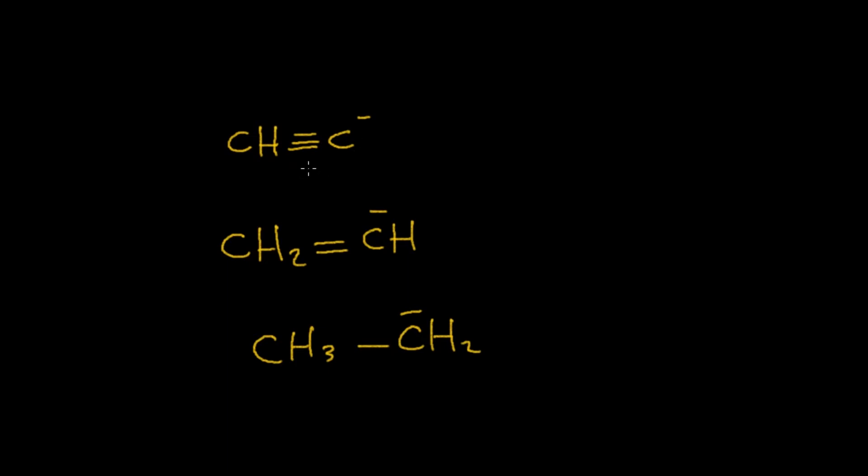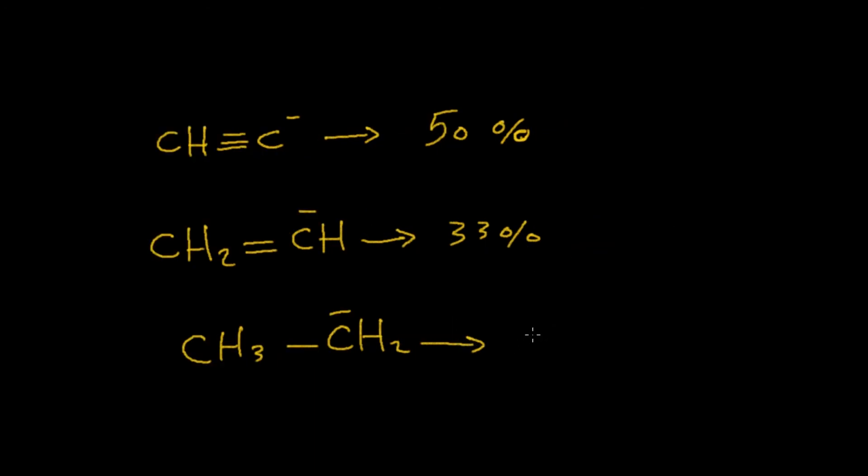As this conjugate base is sp hybridized, it's 50% s character as we said before. This conjugate base contains 33% s orbital character and the last one contains 25% of the s orbital character.